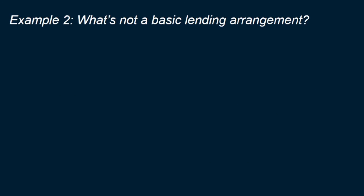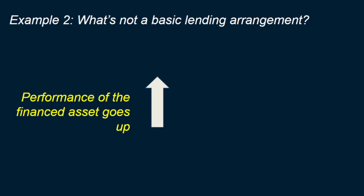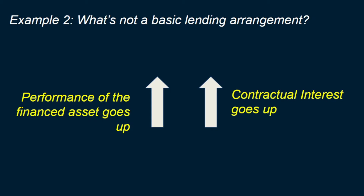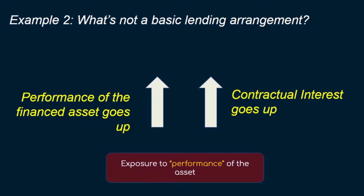Similarly, if a loan was granted to back the purchase of a cash-generating unit and the interest payments are correlated with the cash generated by that unit, it gives the contractual cash flows exposure to the performance of the unit — which is neither a credit risk nor a basic lending risk. It's like a lender saying to the borrower: you pay me more if a particular asset performs better, or less if it doesn't. This is not consistent with the basic lending arrangement.